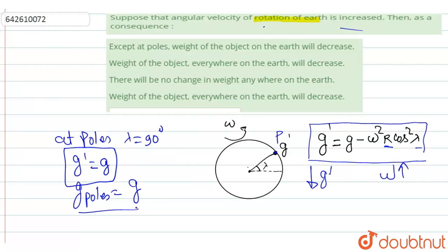If g remains constant, weight will also be constant. Why? Because weight is defined as m times g. Mass is constant, g is constant, both will remain constant. So what will happen? Except at poles, weight of the object on earth will decrease. Why? Because at other parts, weight will be dependent on omega, and omega is increasing, so g dash is going to decrease. But at the poles, there is no effect of omega on the value of acceleration due to gravity. That's why the weight will remain the same. So option one is correct.